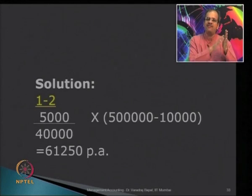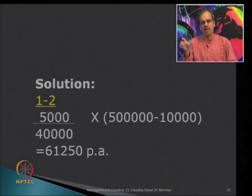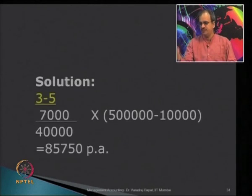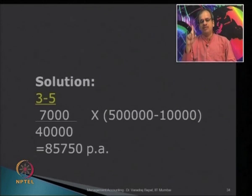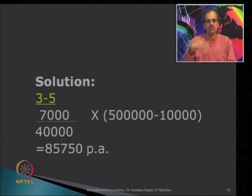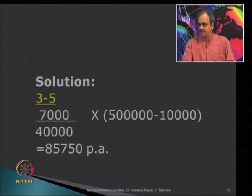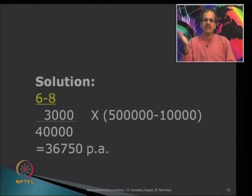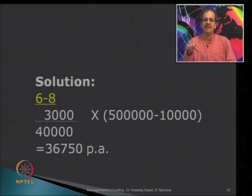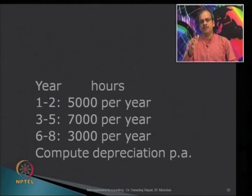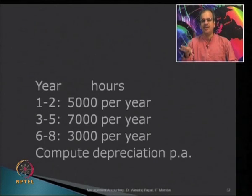Essentially, 50,000 minus 10,000 equals 40,000 as the depreciable amount, divided by 40,000 gives the rate, multiplied by 5,000 hours in years 1 and 2. In years 3 and 4 the machine is used more — 7,000 hours — so the yearly depreciation becomes 87,500. In years 6 to 8 the usage drops to only 3,000 hours, so the depreciation amount is recalculated to 36,750. In the machine hour method, the charge is not uniform but based on the number of hours the machine is actually used.